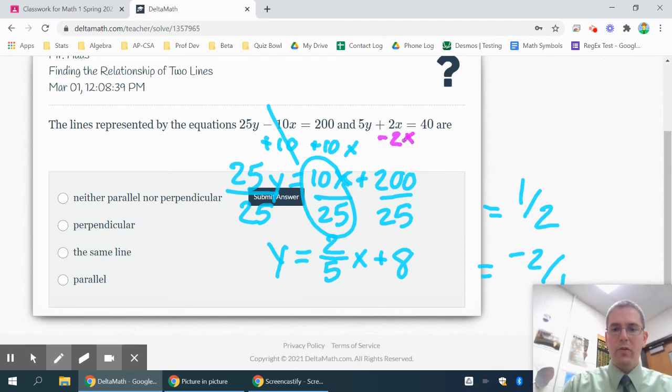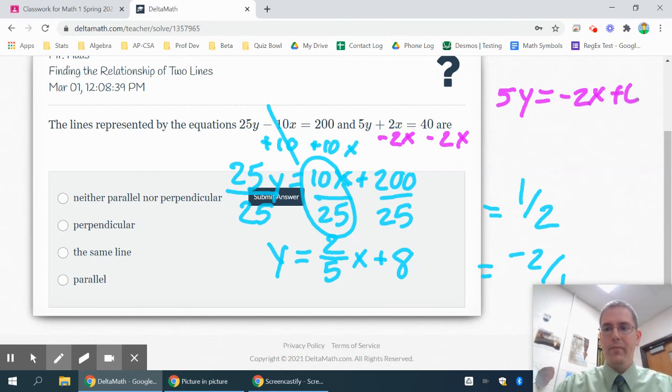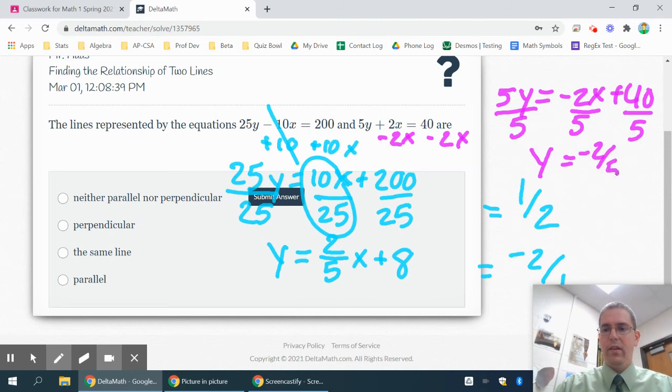This one, to get y by itself I would subtract 2x from both sides, so that would give me 5y equals negative 2x plus 40. Once again divide by 5 to get y by itself, and y equals negative 2/5 x plus 8.